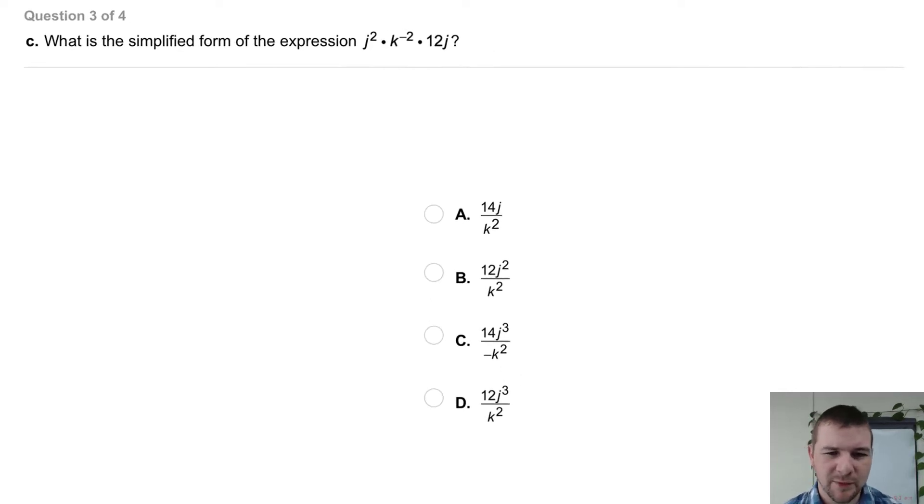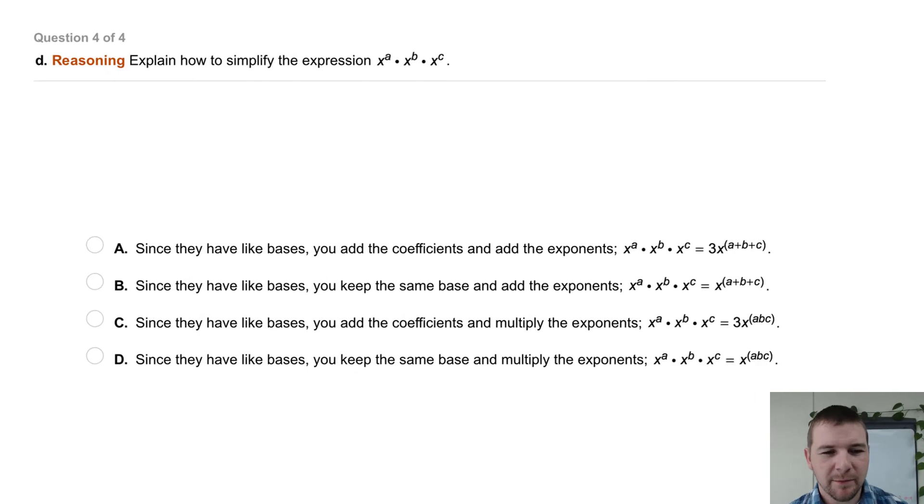C, the expression j squared times k to the negative 2 power times 12j. And finally, part d, a reasoning item. Explain how to simplify the expression x to the a times x to the b times x to the c.